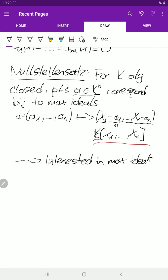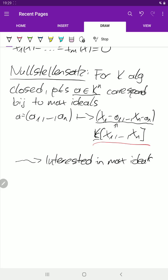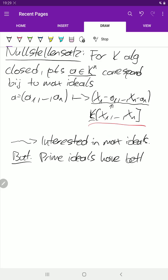So that's the starting point. But we will generalize a little bit. Because prime ideals have better functorial properties. You will see later what I mean by that.